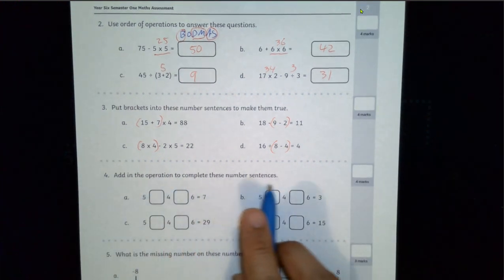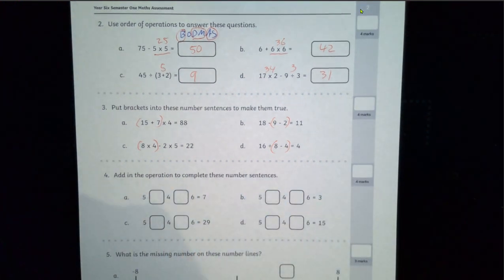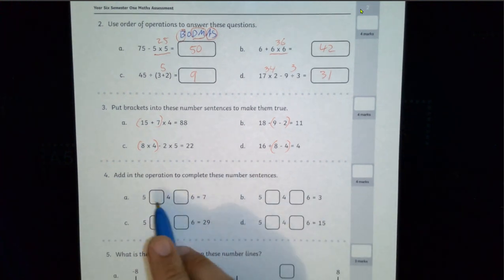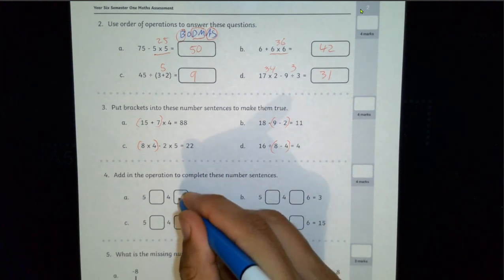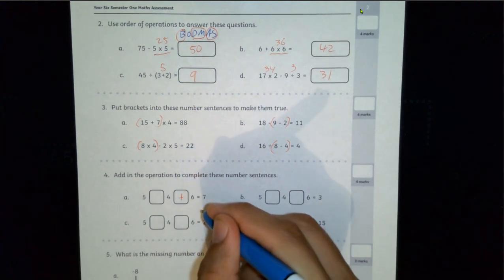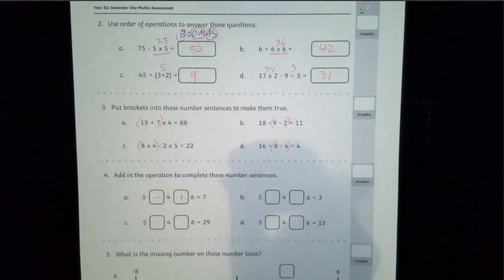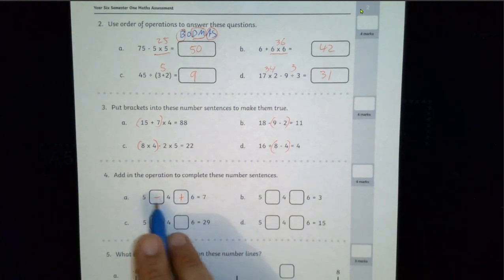Add in the operation to complete these number sentences. So I'm trying to get from 5 to equals 7. So that means it has to go up. So realistically, that means this will be up 6 minus 4. That means it has gone up by 2 in total. That will be correct.